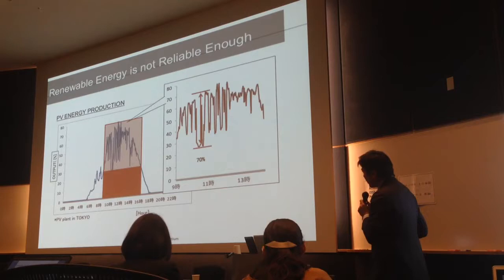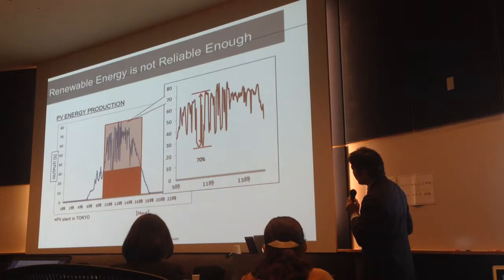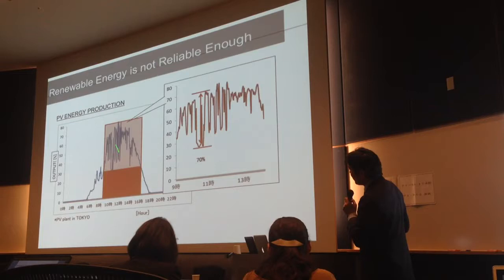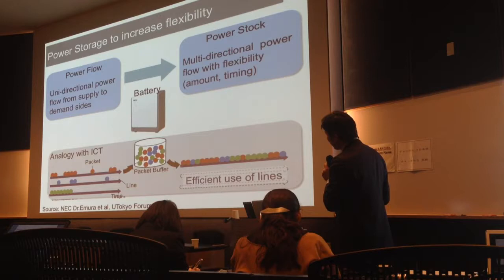But there are still remaining problems. This is an example of the one-day energy trend in the Tokyo area. Even on a fine, sunny day according to weather forecasting, the actual solar output fluctuates like this. A power storage system can manage the uncertainty of both power production and power demand.